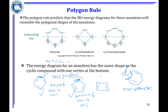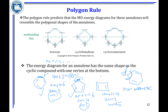Condition 1: cyclic. Condition 2: conjugated. Condition 3: 4n+2 must be solved and n must be an integer. For a compound that is cyclic and conjugated but where 4n+2 equals 4, giving 4n equals 2 and n equals 0.5 — conditions 1 and 2 are met, but condition 3 is not. Since it is conjugated and cyclic but fails the 4n+2 rule, this is known as anti-aromatic.